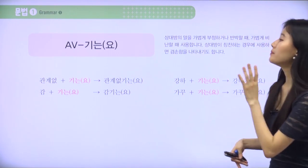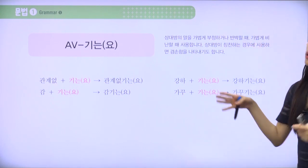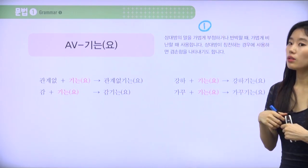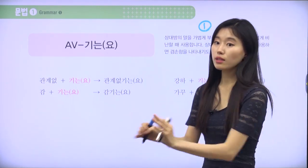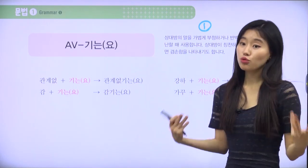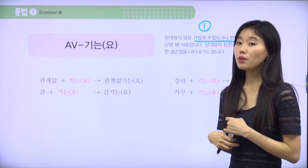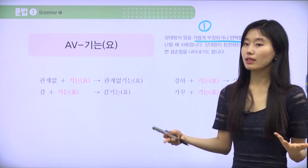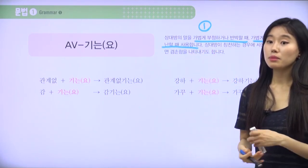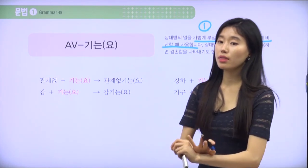Now our first grammar point: 기는요, 그렇기는요, 관계없기는요. The usage is quite various. First, we disagree with or refute someone's opinion — but it's not serious, just a casual way of refutation. So it's like saying 'well, I think...' with this intonation. We can also use it to criticize, but not very seriously. So number one usage: refusing, refutation, criticize — but not that serious.